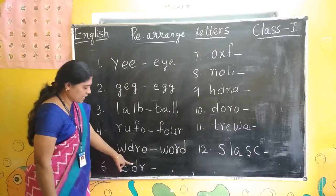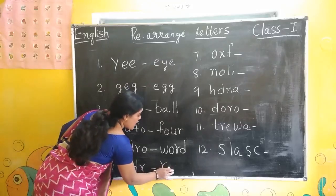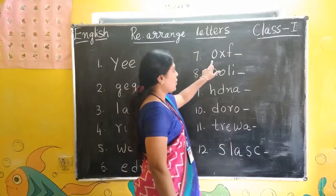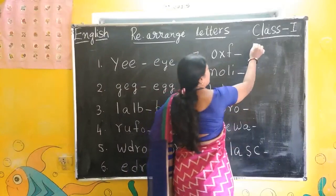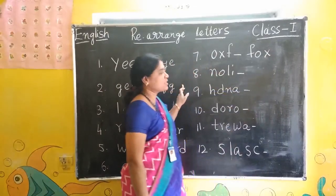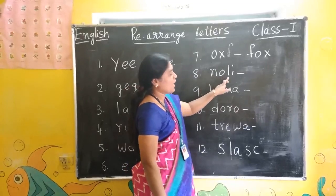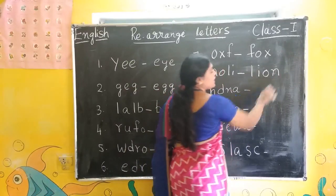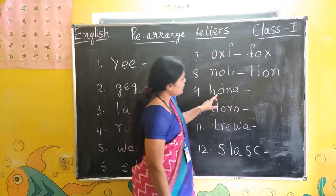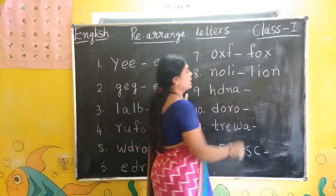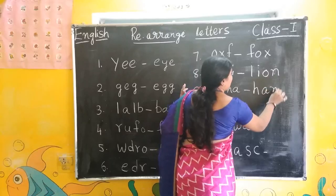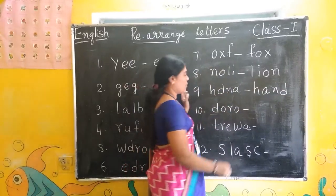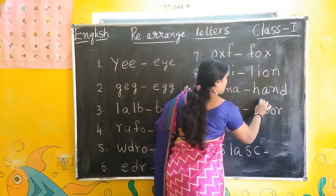Next: E, D, R — rearranged: R, E, D. Red. Next: O, X, F — rearranged: F, O, X. Fox. Next: N, O, L, I — rearranged: L, I, O, N. Lion. Next: H, B, N, A — rearranged: H, A, N, D. Hand. Next: D, O, R, O — rearranged: D, O, O, R. Door.